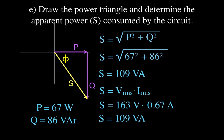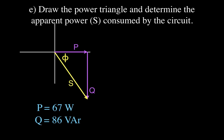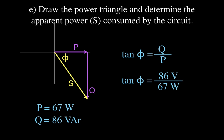To check, we calculate the phase angle phi using the power values. The tangent of phi equals Q over P — opposite over adjacent — which is 86 divided by 67, and once again the angle is 52 degrees. You can do it multiple ways and check that it matches what you got from the impedance triangle.